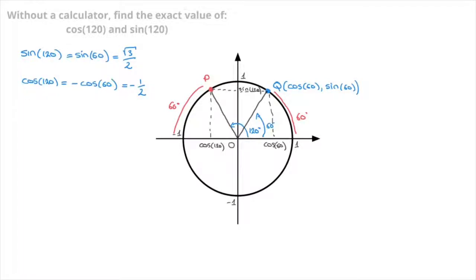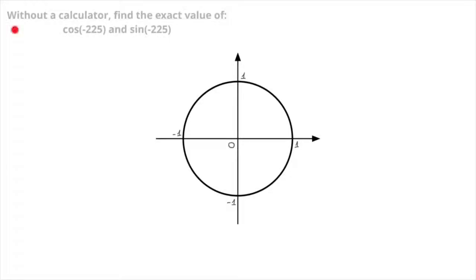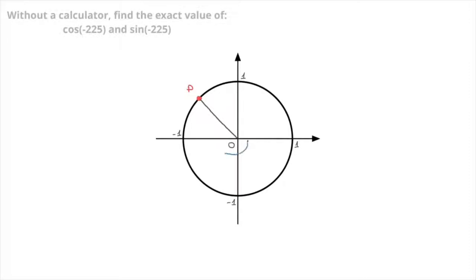Let's look at one last example. We're asked, without a calculator, to find the exact value of cosine of negative 225 and sine of negative 225. Starting from the point with coordinates 1, 0, the angle negative 225 is found by moving clockwise around the unit circle until we've gone through an angle of 225 degrees — approximately here. I'll add that point and I'll call it P. I add the radius OP like so, and so the angle we're dealing with here is negative 225 degrees, measured clockwise.